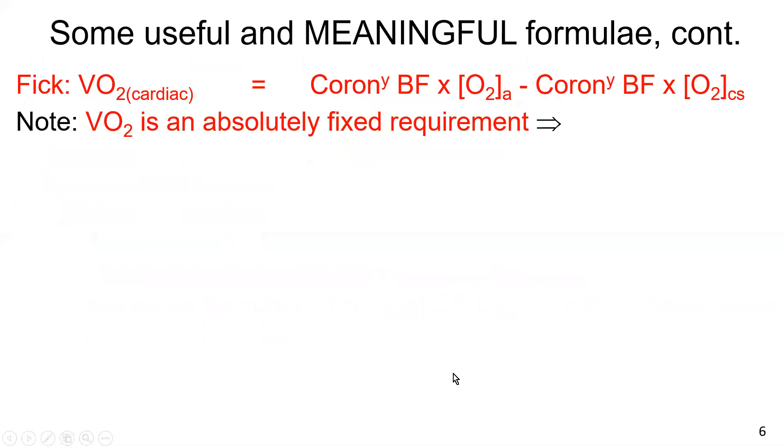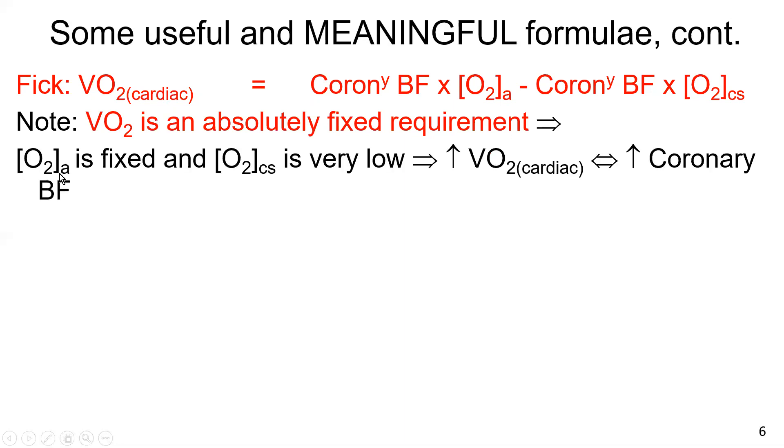So just coming to my last slide here, VO2 is an absolutely fixed requirement. In other words, if you need 250 mils of oxygen per minute, then that's what you need. And you don't do well if only 200 is supplied. So given that O2 arterial for most healthy lungs without anemia is fixed and at a fairly maximal level, and O2 coronary sinus is already very low. This means that essentially VO2 cardiac depends very much on coronary blood flow.